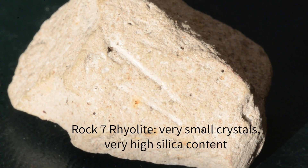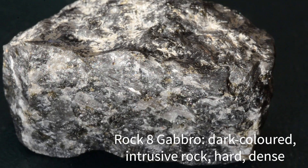Rhyolite actually has lots of silica, but it is an extrusive rock, so it doesn't have very large crystals. You can barely see them — you can see those black spots.